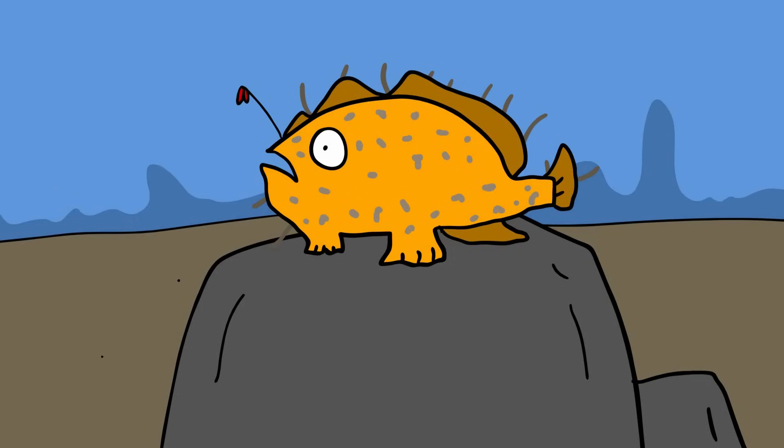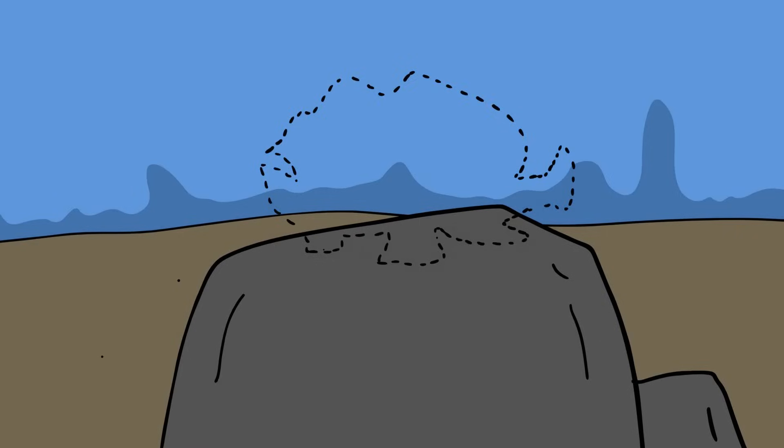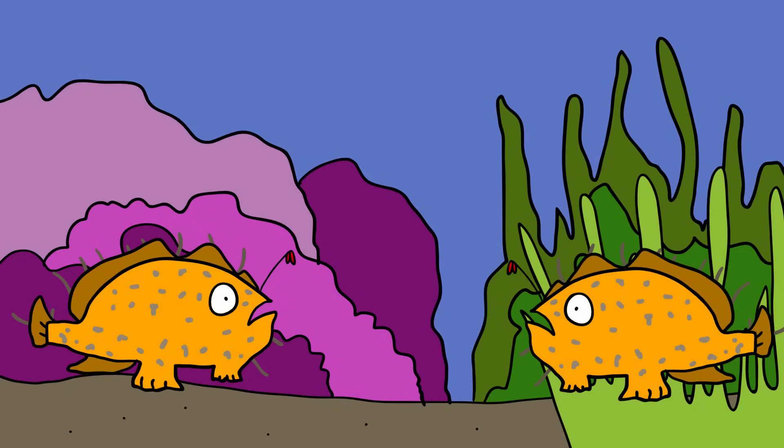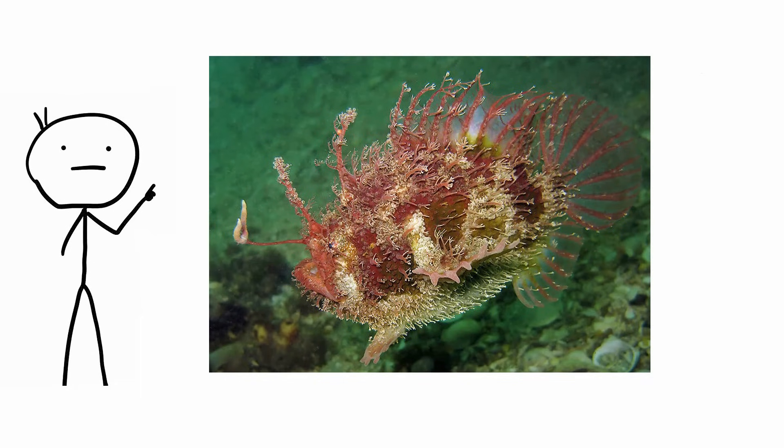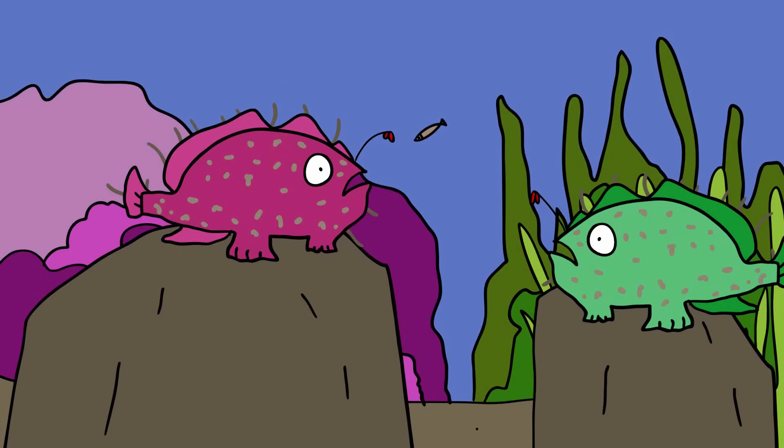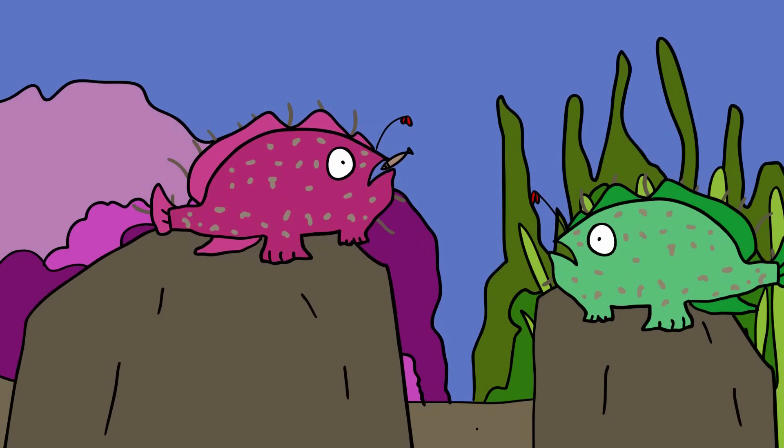Their only hope of catching prey, therefore, is to be invisible. They accomplish this in several different ways. Firstly, they can manipulate their coloring to match their background. They are also covered in warts, which gives their skin a rougher, more rock-like appearance. Finally, they are covered in long spines and fleshy filaments that make them look like seaweed or coral. Unsuspecting prey can be attracted to the lure or simply searching for food among the seaweed before being inhaled by the anglerfish's giant, gaping mouth.